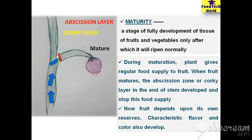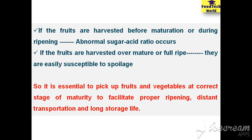Characteristic flavor and color are also developed during this process. If fruits are harvested before their maturation period or during ripening time, then the sugar acid or brix acid ratio of the fruit is abnormal. And when fruits are harvested over the maturation time, or over-ripening is done, then the fruits are susceptible to various microorganisms that cause spoilage. So it is very important to pick up fruits and vegetables at the correct stage of maturity in order to facilitate proper ripening, distance transportation, and long-term storage life.